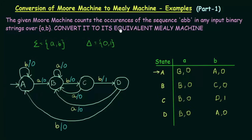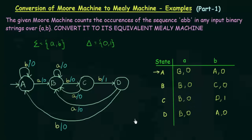We were given the Moore machine that counts the occurrences of the sequence ABB in any input binary string over AB, and we converted it to its equivalent Mealy machine. We drew the transition diagram and made the transition table. This was another example of conversion of Moore machine to Mealy machine. We will see more examples in the coming lectures. Thank you for watching.